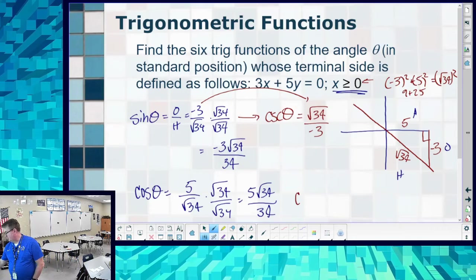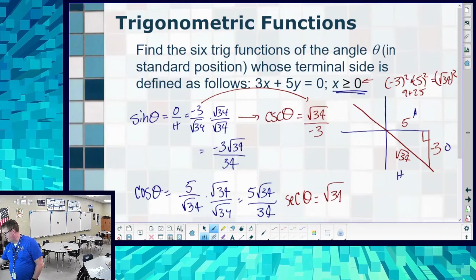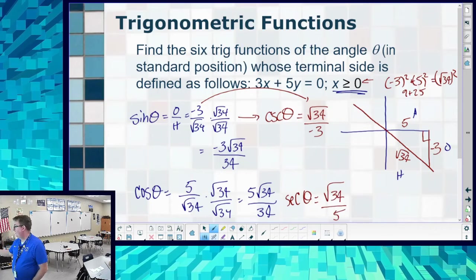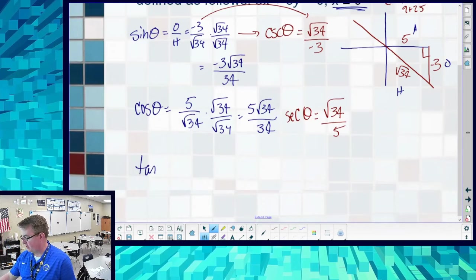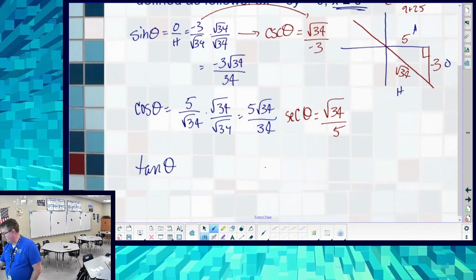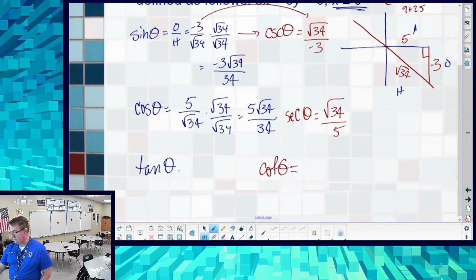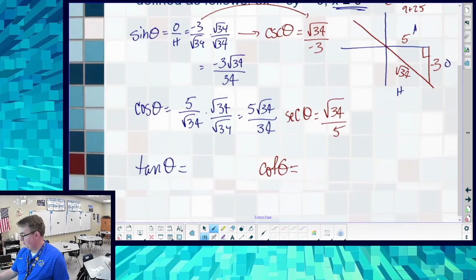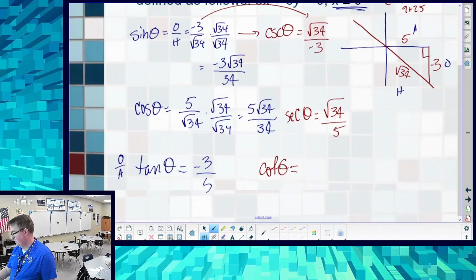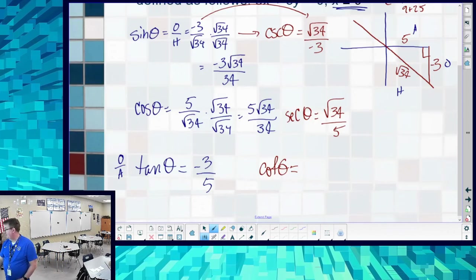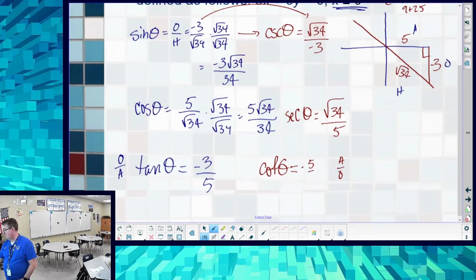So cosecant of theta is going to equal square root of 34 over -3, or -root 34 over 3. Secant is root 34 over 5. The nice thing about these is that we're not going to have to rationalize them because, since it's opposite and adjacent, we don't have any radicals in them, at least today. So tangent is going to become -3/5. And cotangent, because it is adjacent over opposite, is going to be -5/3.